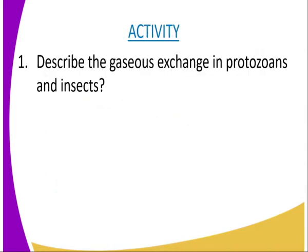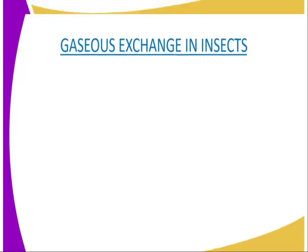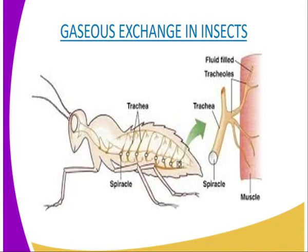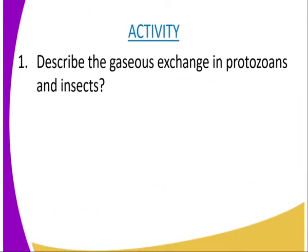Having done that, we can have the following activity, whereby you are required to describe the gaseous exchange in protozoans — we took the amoeba as our example — and also describe the gaseous exchange in insects. In our lesson we used the grasshopper as the example insect. So in your activity, you should describe the gaseous exchange in any protozoan and any insect of your choice.